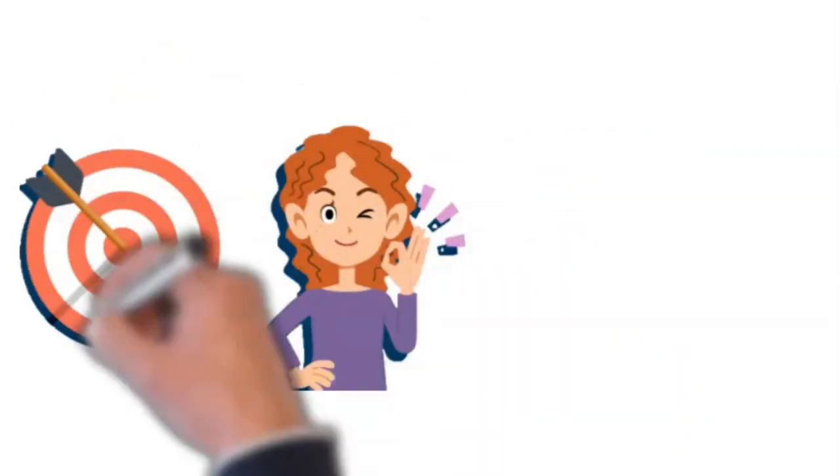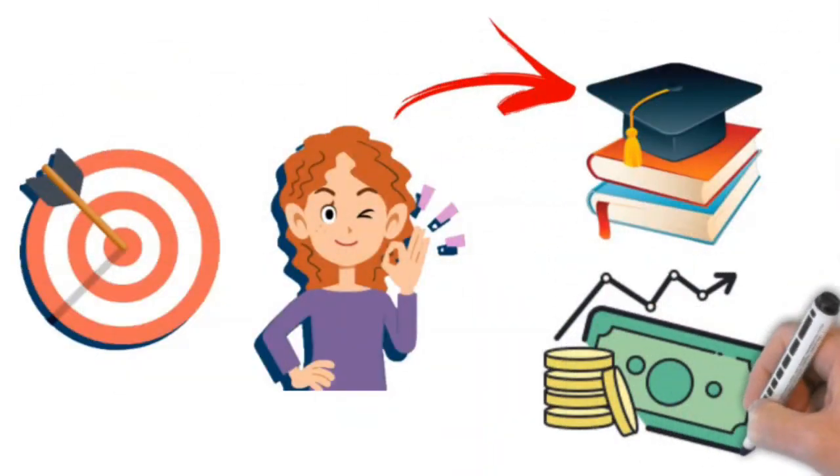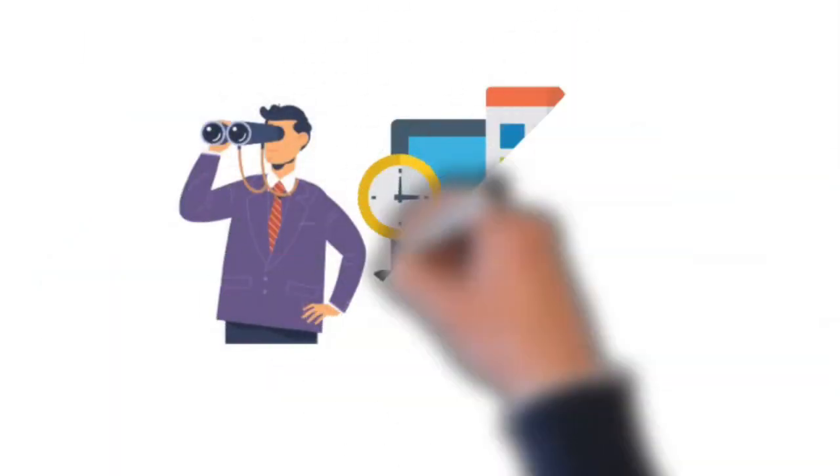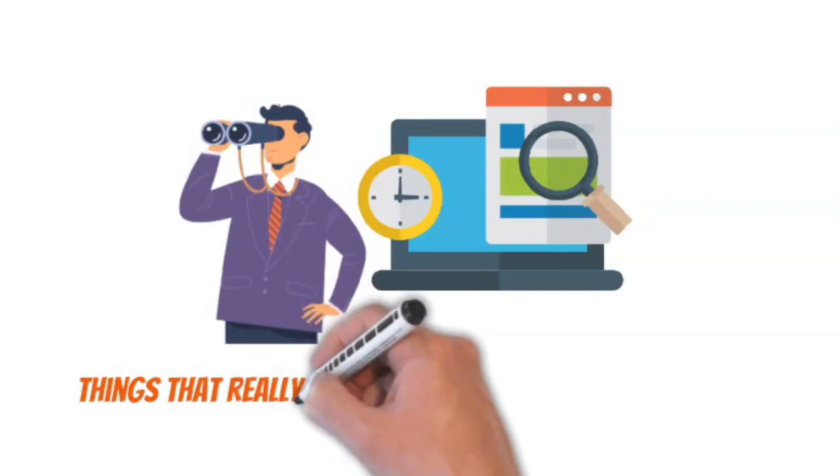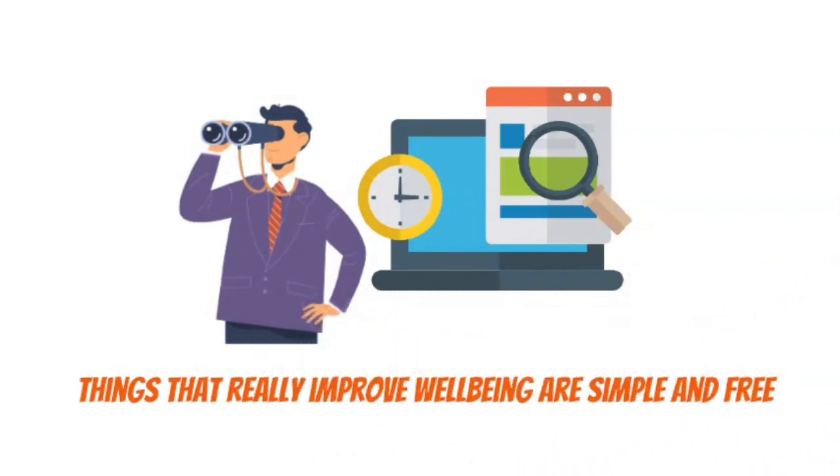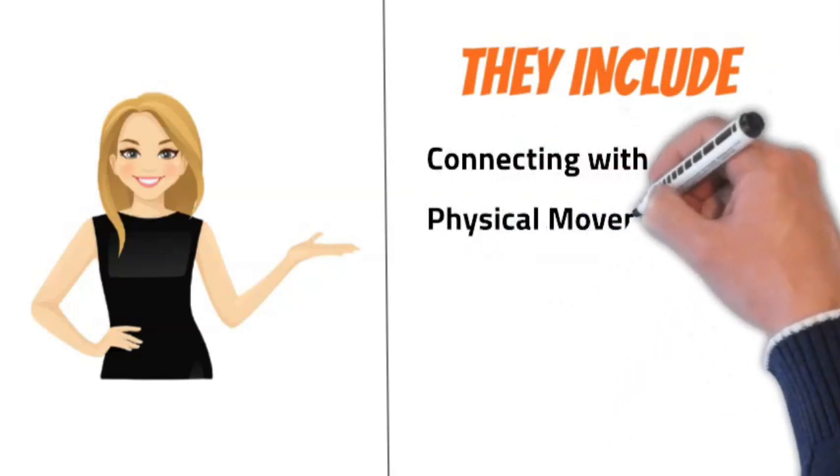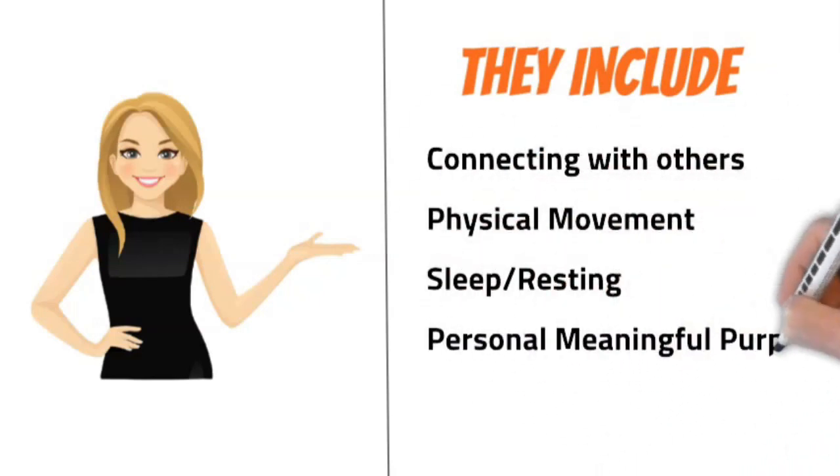Solution. Try doing different things and finding out what works for you. If you feel a nagging pressure to constantly try new things, take a step back. A wealth of research and evidence has shown that things that really improve well-being are simple and free. They include connecting with others, physical movement, sleep, resting and having a personal meaningful purpose in life.